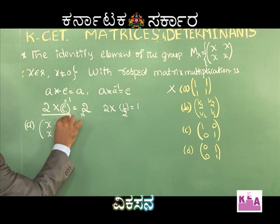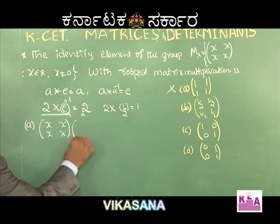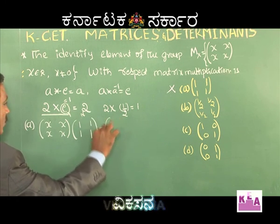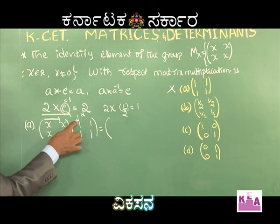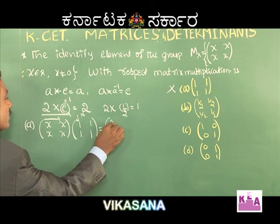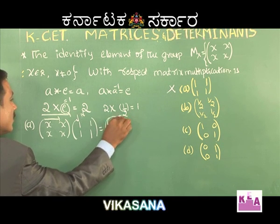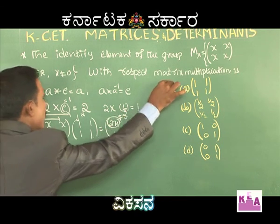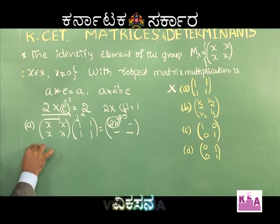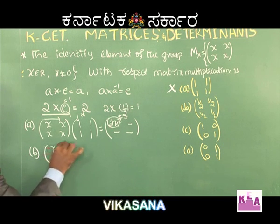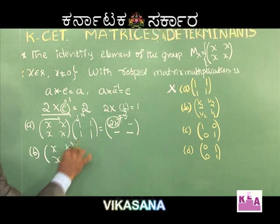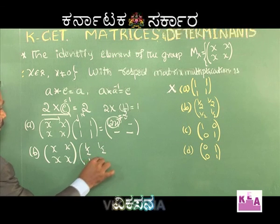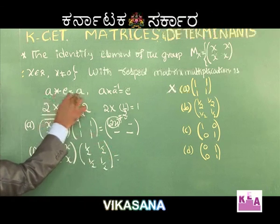Matrix [x, x; x, x] into [1, 1; 1, 1]: first row into first column gives x·1 + x·1 = 2x, but the first element should be x, not 2x. So option A is not the right choice. Option B is the identity matrix [1/2, 1/2; 1/2, 1/2]. So A star E = A.